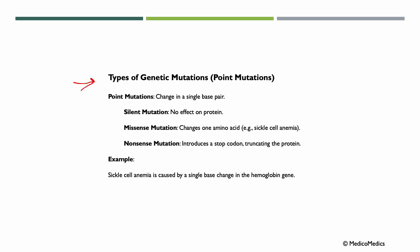Let's talk about different types of genetic mutations, starting with point mutations. Point mutations occur when a single nucleotide in DNA is altered, potentially affecting protein function. These mutations can be classified into three main types. First, silent mutations: a change in a nucleotide that does not alter the amino acid sequence due to the redundancy of the genetic code. These mutations usually have no effect on protein function.